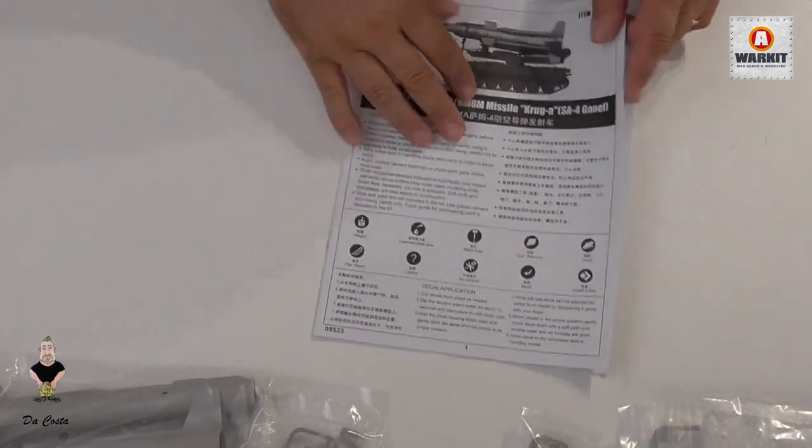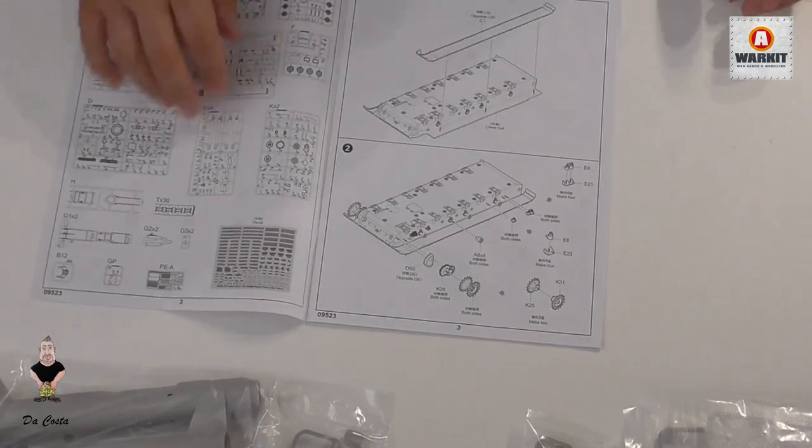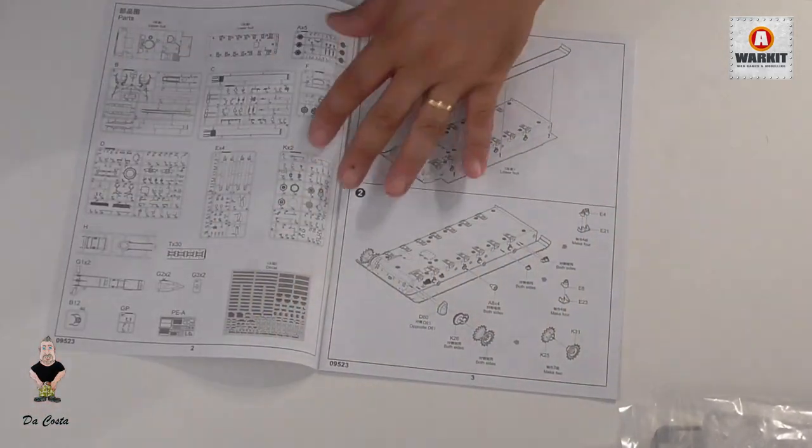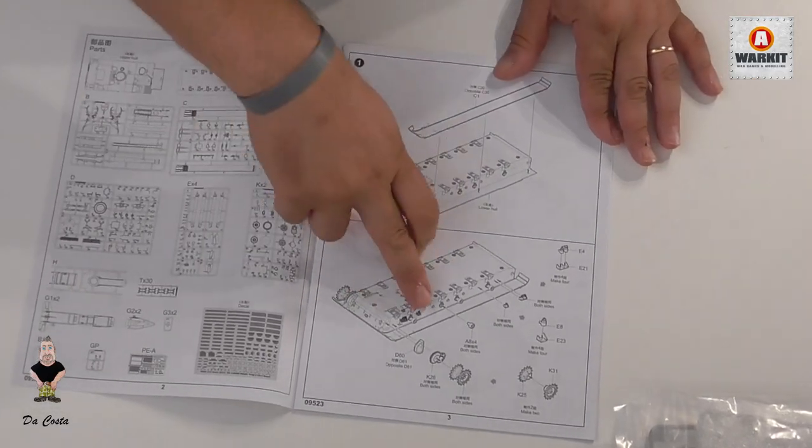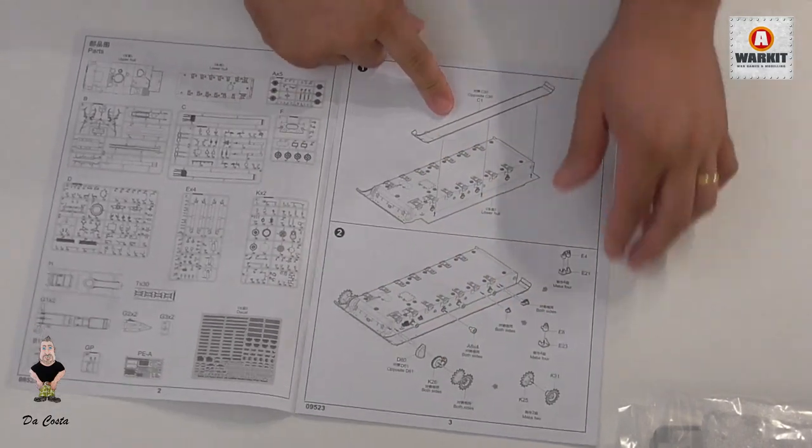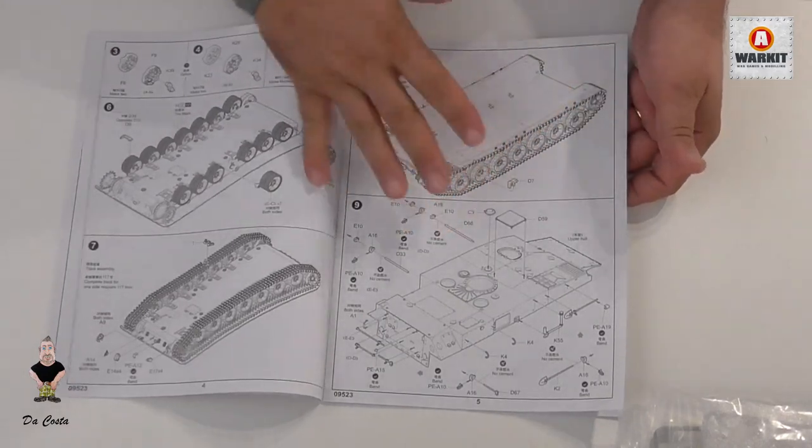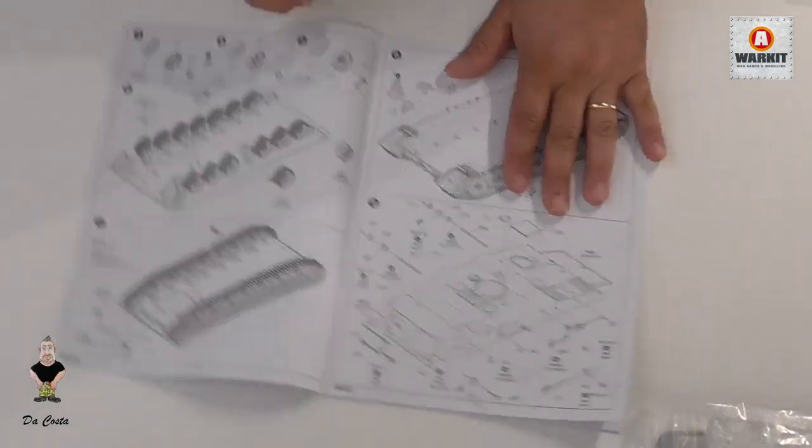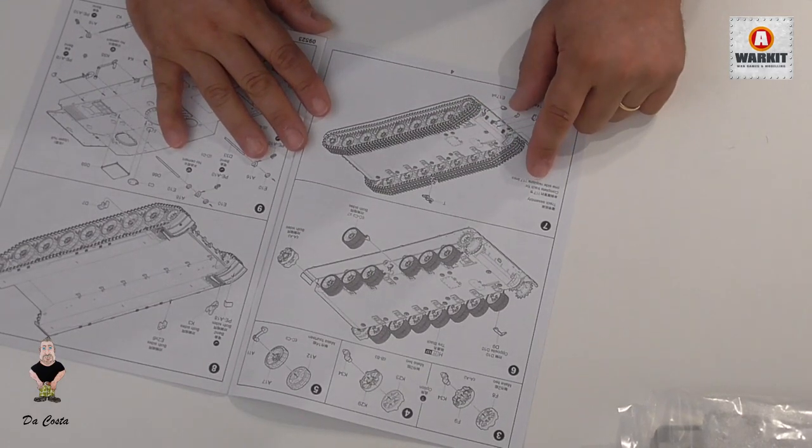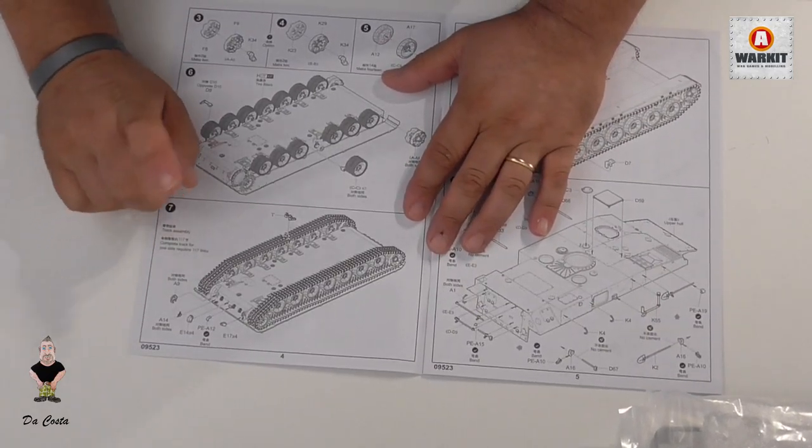Let's see the instructions. You've got all the sprues and the start of building. Let me place this here so it's easier for you to see. We start, of course, with the suspension, with the sprocket wheel. You put the side skirts - the top side skirts, I think it's called. I'm sorry if that's wrong, I normally talk about this in Portuguese.